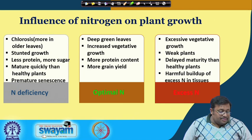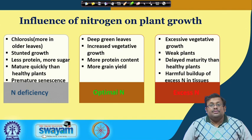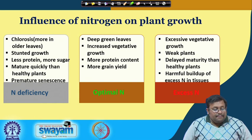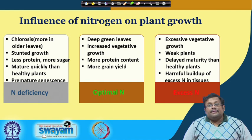In case of nitrogen deficiency, you will see chlorosis — in older, lower leaves they turn pale yellow in colour. This is called chlorosis, and it also causes stunted growth, less protein, more sugar, plants that mature quickly, and finally premature senescence, which is the aging of the plant. In case of optimal nitrogen, you will see dark green leaves, increased vegetative growth, more protein content, and more grain yield.